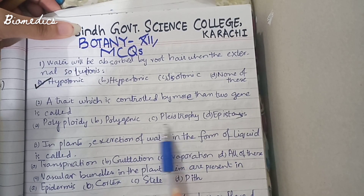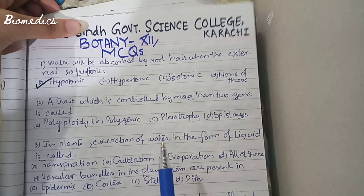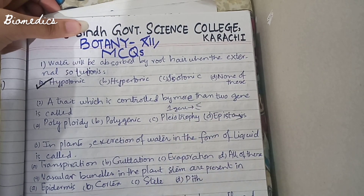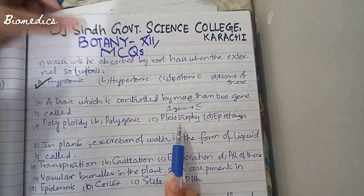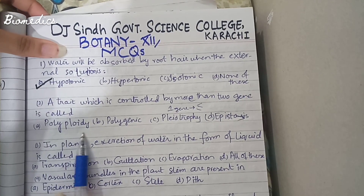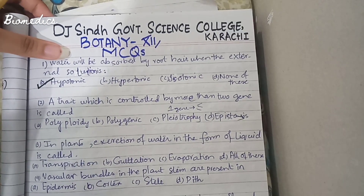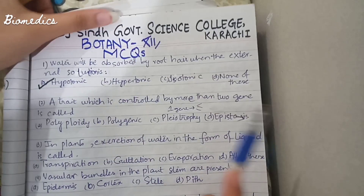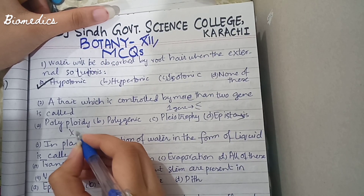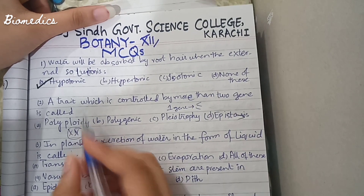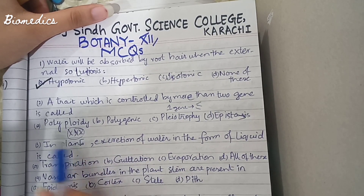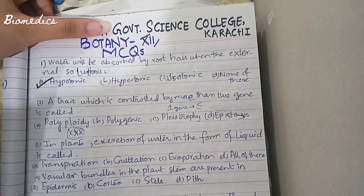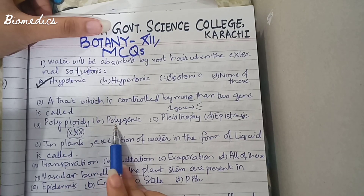Pleiotropy is a phenomenon where one gene affects more than one trait or feature. Option A, polyploidy, refers to the number of chromosomes — when they are multiplied beyond diploid to triploid, tetraploid, etc. A pair of homologous chromosomes becoming triploid is called polyploidy. Polyploidy refers to the number of chromosome sets, not gene expression.